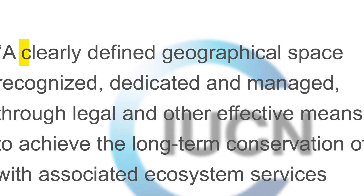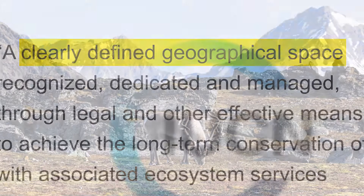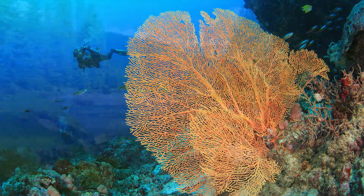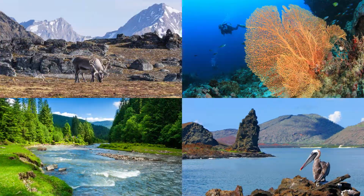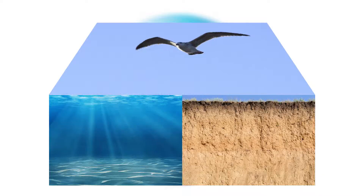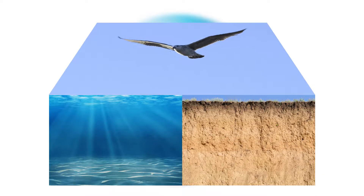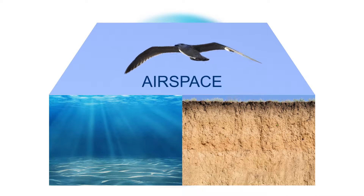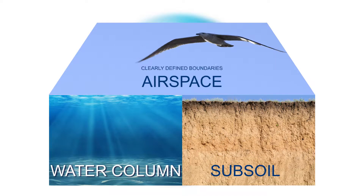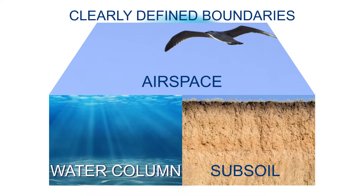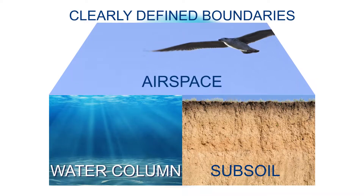Protected areas require a clearly defined geographical space. Protected areas can cover land, sea, inland waters, or some combination. They should protect three-dimensional space, including airspace, subsoil, and the water column. In all cases, the boundaries should be clearly defined.